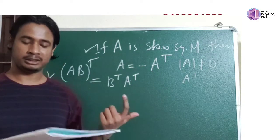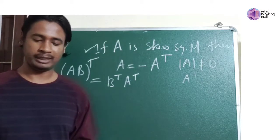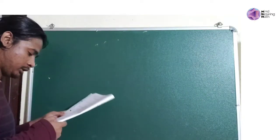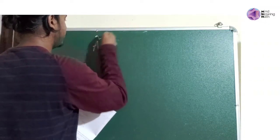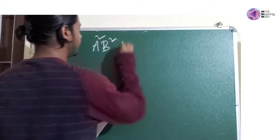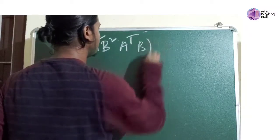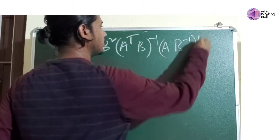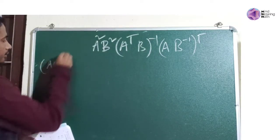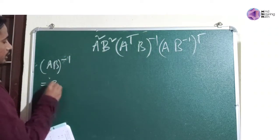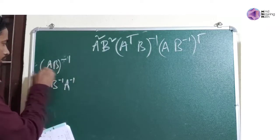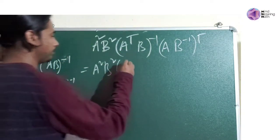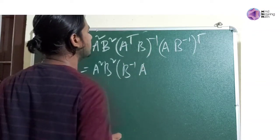If you have a skew symmetric matrix, let's try to solve this question first. A transpose B whole inverse, AB inverse transpose. So, let's try: A, B inverse, B inverse, A inverse. First time A here, A squared, B squared, inverse to A inverse, B inverse, A transpose.